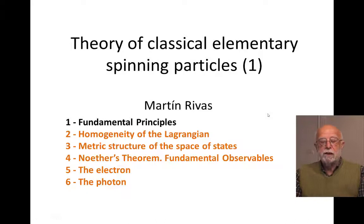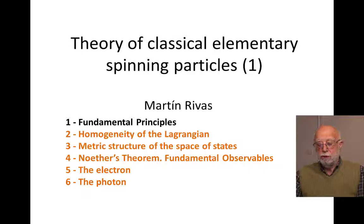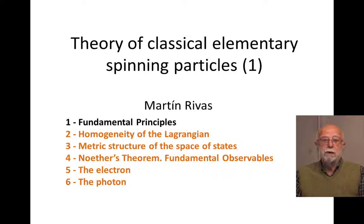We are going to introduce a theory of classical elementary spinning particles. It is a set of six lectures in which the first one we are going to introduce the fundamental principles on which this formalism is based. Because one of the fundamental principles is going to be a variational principle and therefore a Lagrangian description of elementary particles, the second lecture will be devoted to a mathematical property of the Lagrangian.